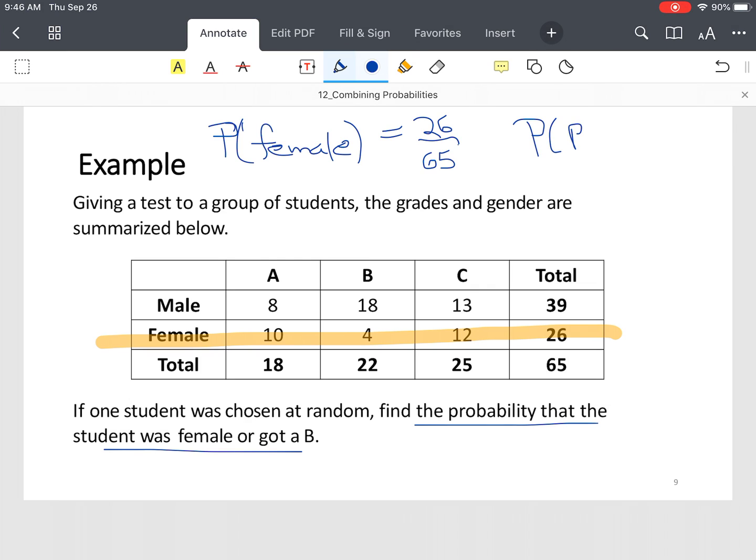Probability that a student earned a grade of B. So grade of B. We look. We want a B column. We had 22 students out of 65.